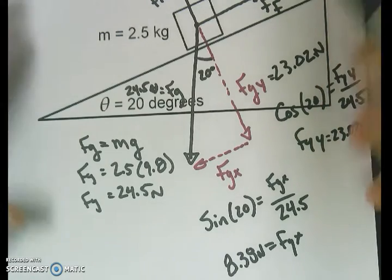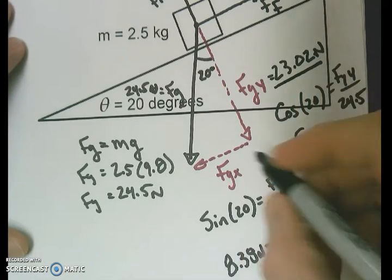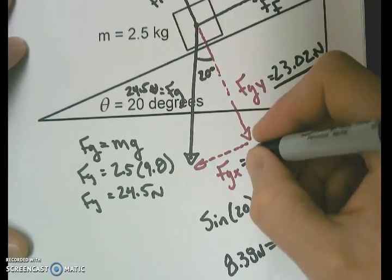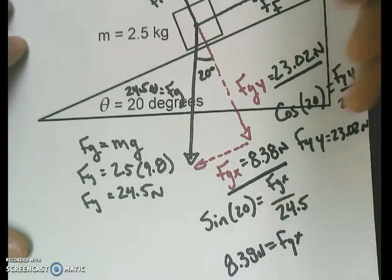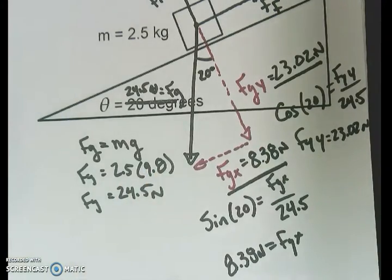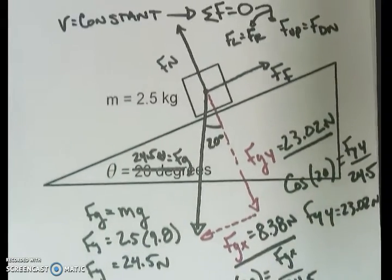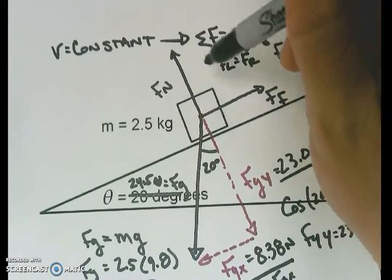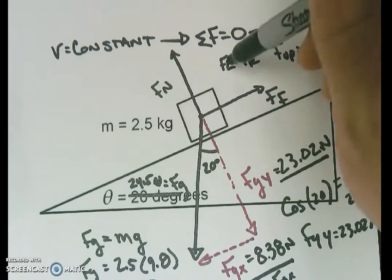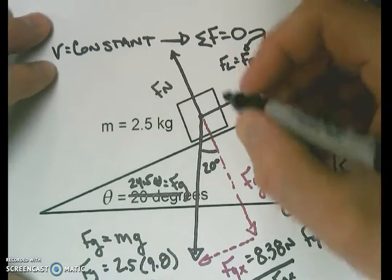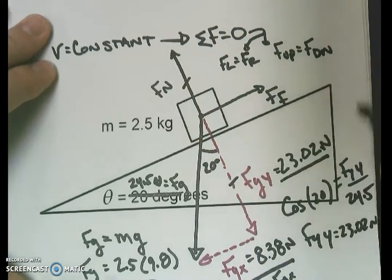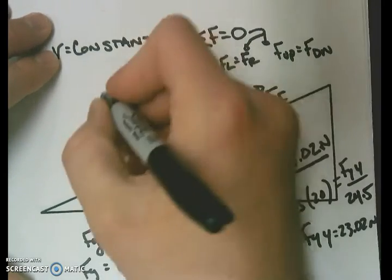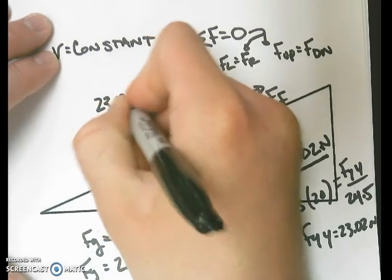I have my FGY, I have my FGX of 8.38, I have my force of gravity. Now, if it's constant velocity, my ups equal my downs, my lefts equal my rights. So what that means is my up force normal will equal my down force of gravity. Because those are the only up and down forces, I can say my force normal must be 23.02 newtons.